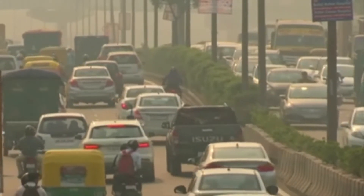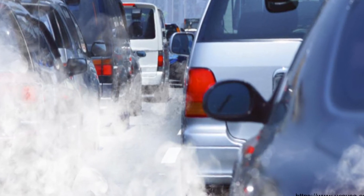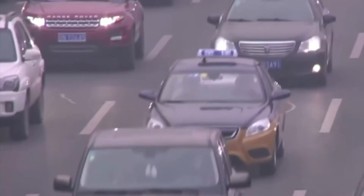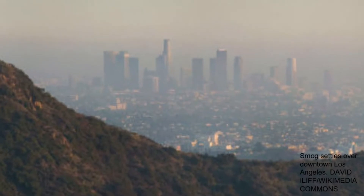According to National Geographic, the sources of air pollution include industry and energy supply, dust, transport, agricultural practices, waste management, and household energy. All kinds of transportation contribute to smog and air pollution, from cars to freighters to motorcycles — all of these play a role.